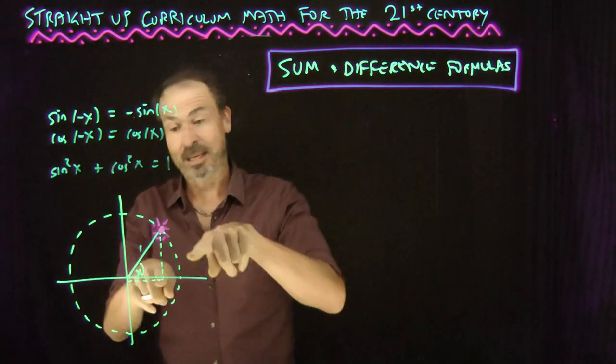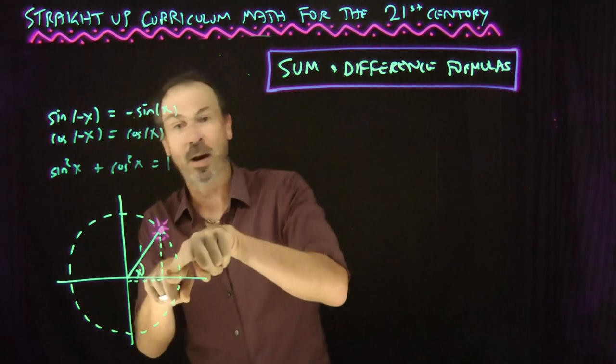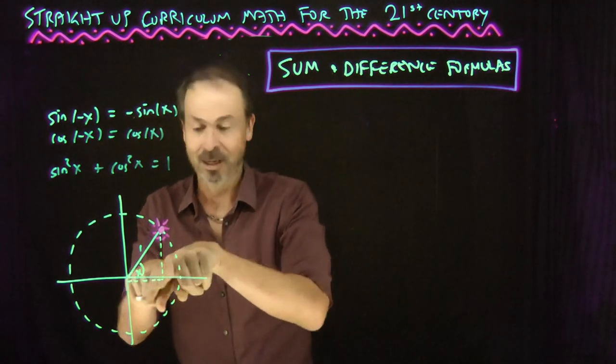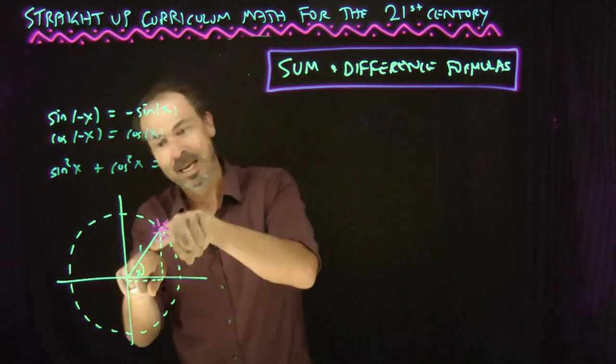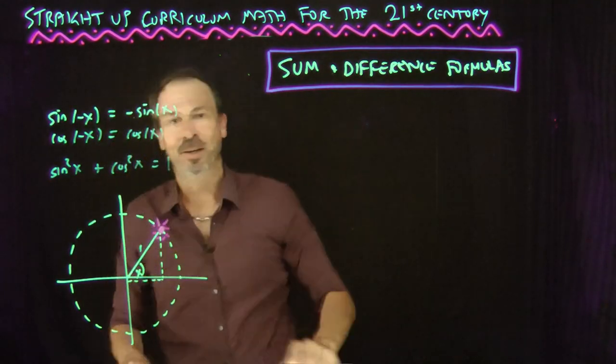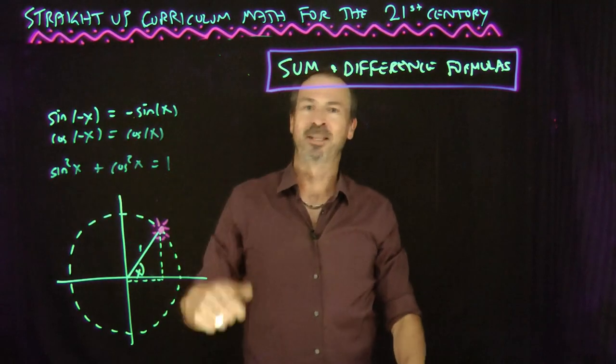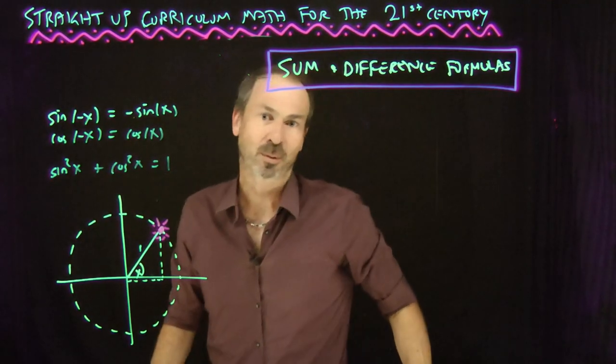Pythagoras' theorem says that this side squared — sine squared — plus this side squared — cosine squared — equals this side squared — one squared. Sine squared plus cosine squared equals one.